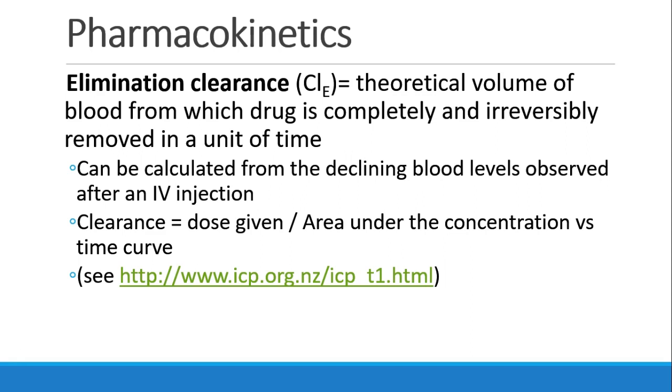One other concept we should just touch on briefly is the idea of elimination clearance. We already mentioned clearance when we were talking about the liver. Clearance is just this theoretical volume of blood from which drug is completely removed in a unit of time. And we know that that's not really how it happens because it's not completely removed, just most of it is removed, or some of it is removed, and it's a reiterative process. Nevertheless, it's helpful to think of the theoretical volume of blood from which drug is completely removed in a unit of time. This is called the elimination clearance, and we can calculate it by looking at declining blood levels after an IV injection. We can see that here in the simulation briefly.